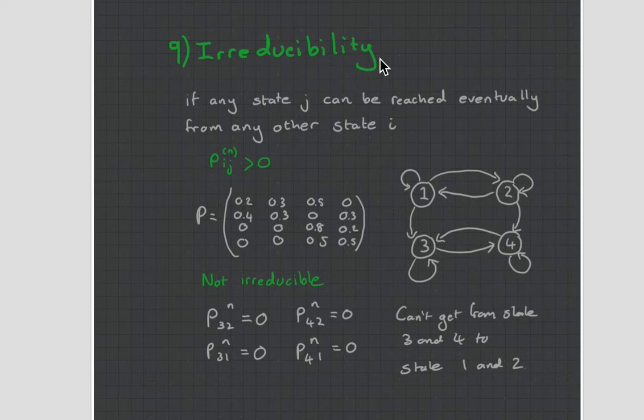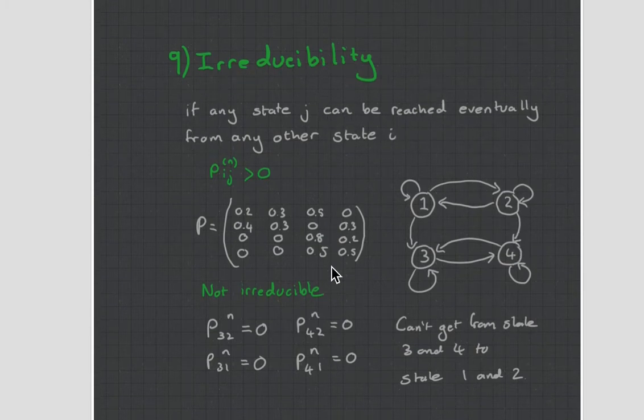Irreducibility. This is a property that says if any state j can be reached eventually from any other state i. So if I can get from this state to any other state, so if all my states are connected somehow, you can see 1 and 4 are not directly connected, but I can get to 4 by jumping to 2 and then 2 to 4, or jumping from 3 to 4. Then it's known as irreducibility. If I can't do that, then it's called not irreducible. If a state is absorbing, you can't really go from that state back to another state, so therefore it will not be reducible.